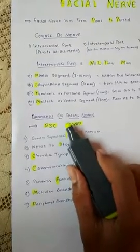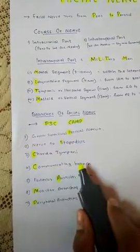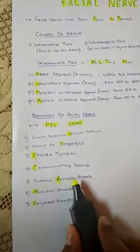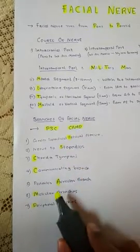In CAMP, the first letter C stands for the communicating branch. The fifth one is posterior auricular branch, where A stands for auricular.